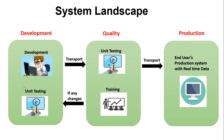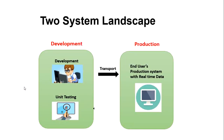There are two more types of system landscape: the two-system landscape and the one-system landscape. The two-system landscape is very similar in functionality to the three-system landscape, but with one major difference — there is no quality server. It is an alternative for smaller SAP implementations where little workbench development takes place, for those who don't want to invest much. The only servers available are development and production, and the flow goes from development to production.